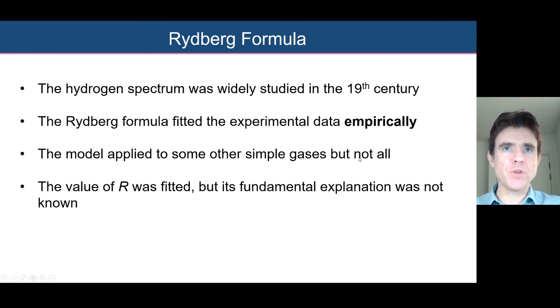So in summary, the hydrogen spectrum was very much studied in the 19th century. And that was, of course, due to the sun and the Fraunhofer lines we've looked at. But then also there were these emission spectra from hydrogen gas, for example. And that's where the Rydberg formula came in to empirically describe the data.